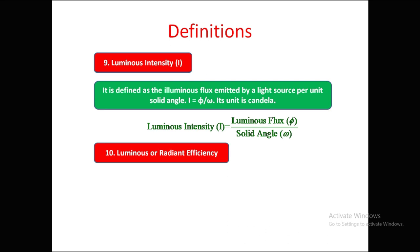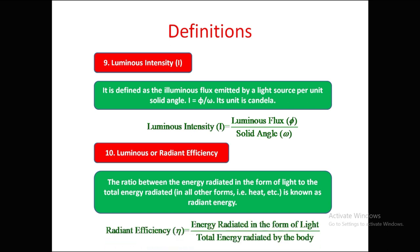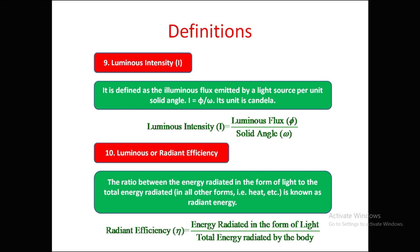Next is radiant efficiency or luminous efficiency. It is the ratio of energy radiated in the form of light to the total energy radiated in all forms — including heat and other forms. Radiant efficiency = energy radiated as light / total energy radiated by the body.